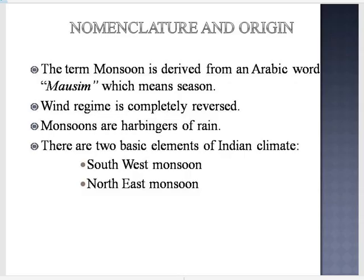India is a land of monsoon climate. The term monsoon is derived from an Arabic word which means season. Therefore, the word monsoon denotes a season in which the wind regime is completely reversed. For the people of India, monsoon is a harbinger of rain, as the people here are dependent on monsoon for cultivation.